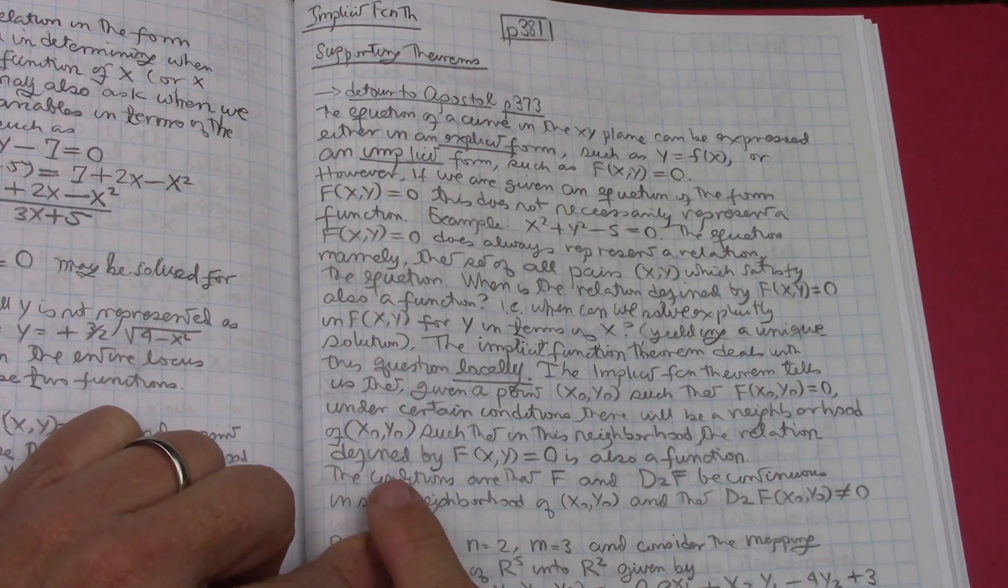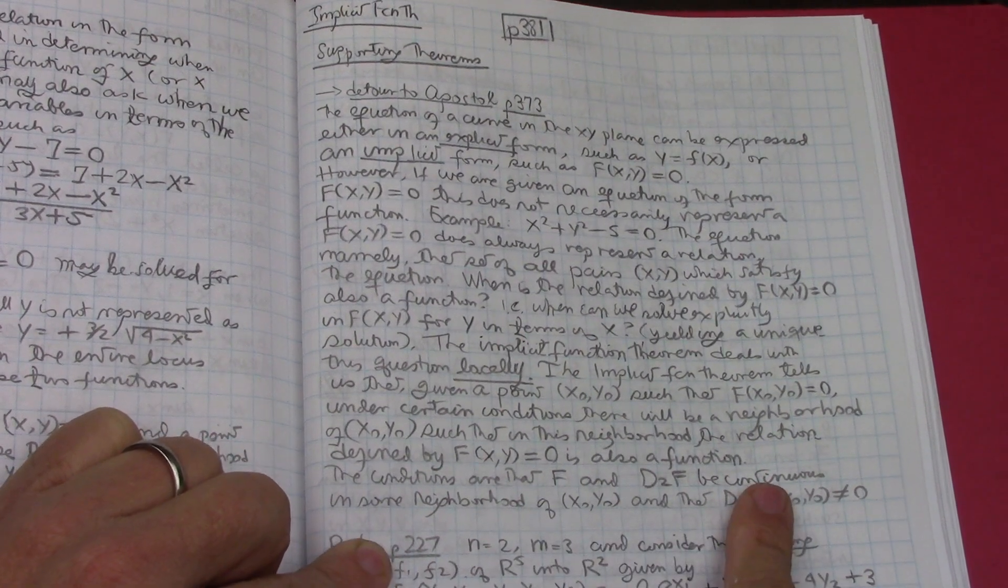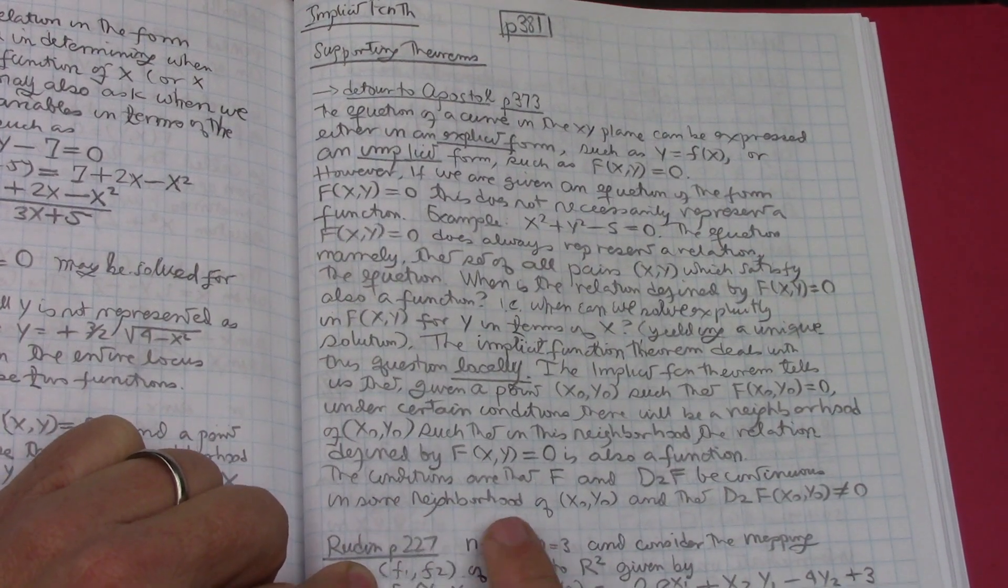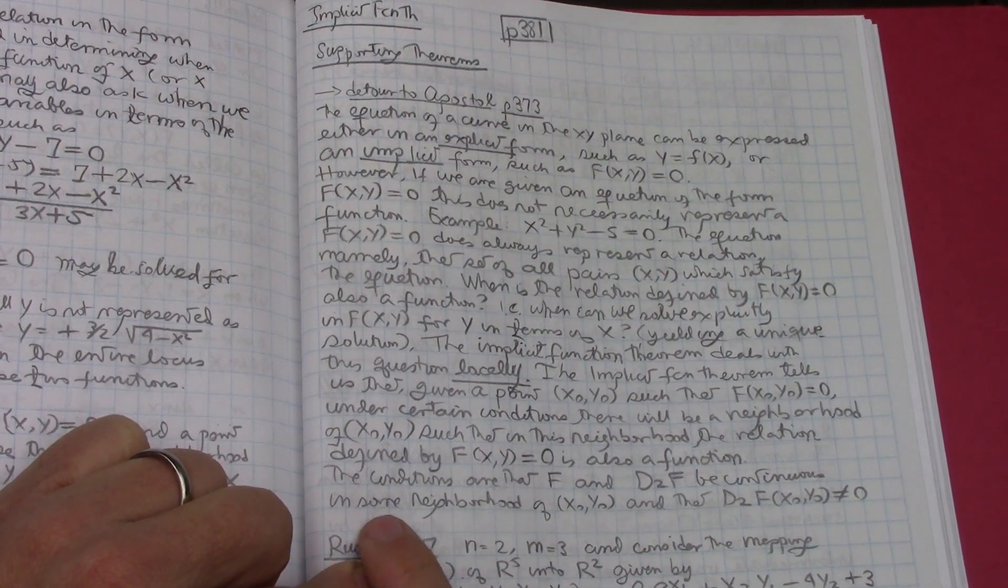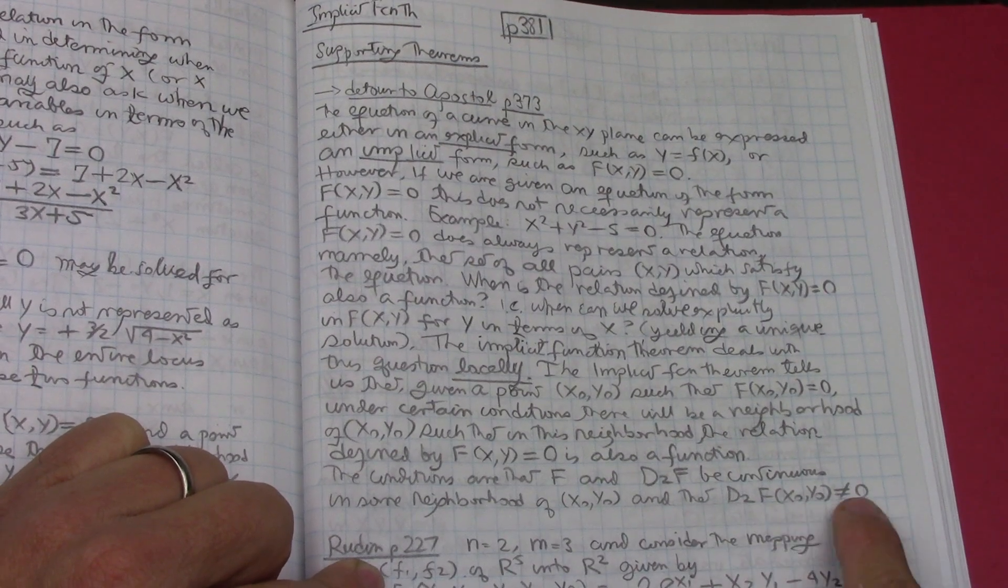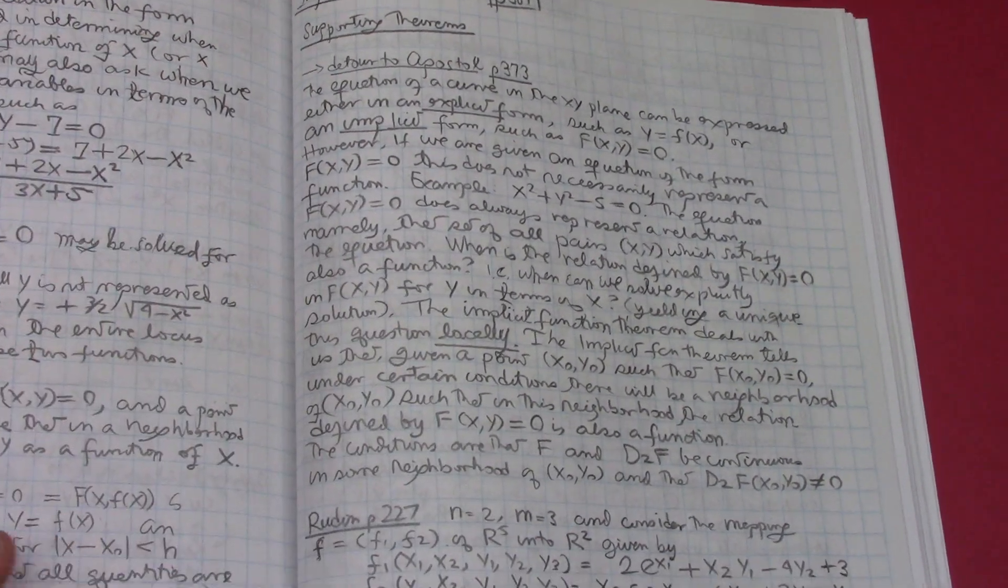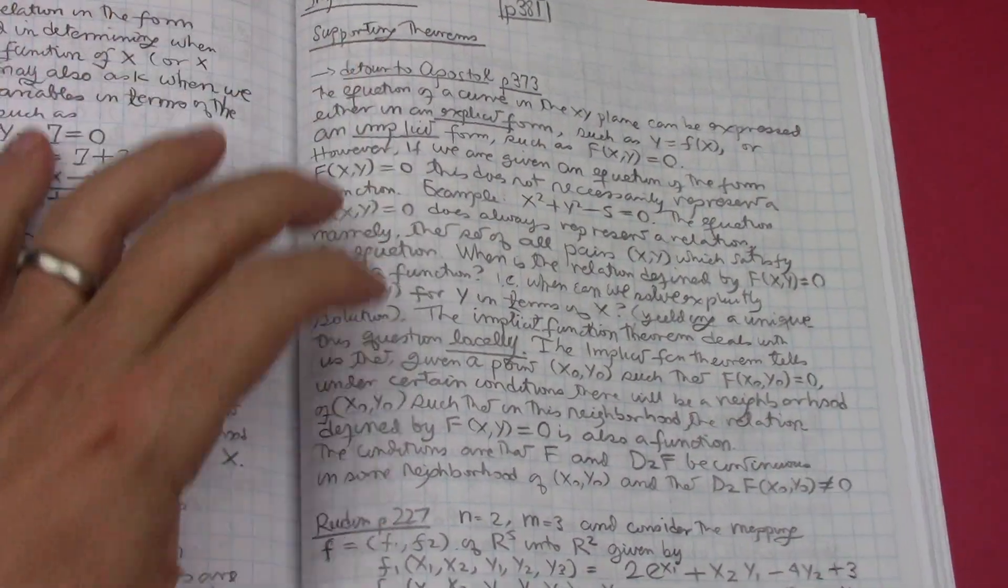In this neighborhood, the relation defined by f(x,y) equals zero is also a function. The conditions are that f and the derivatives of f be continuous in some neighborhood of (x₀, y₀), and that the derivatives do not equal zero. That's a great explanation. Apostol really hit it out of the park here.